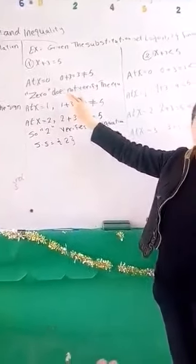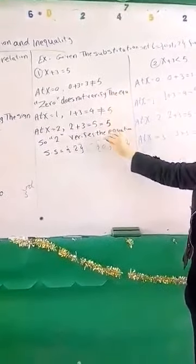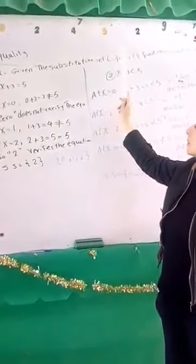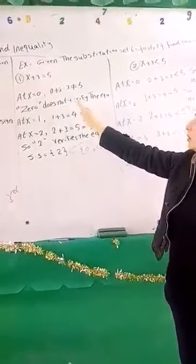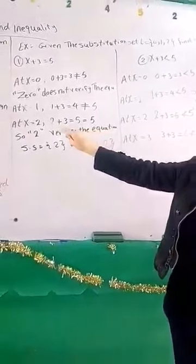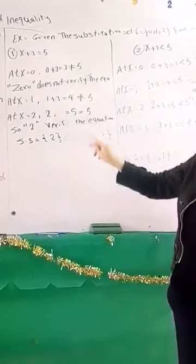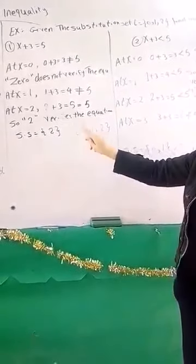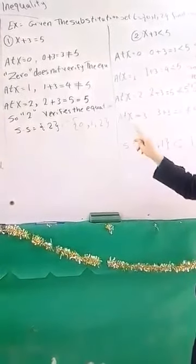The solution is x equals 2. We use steps to find this using substitution. At x equals 0: 0 plus 3 equals 3, which is not equal to 5, so 0 does not satisfy the equation. At x equals 1: 1 plus 3 equals 4, which is not equal to 5, so 1 does not satisfy the equation. At x equals 2: 2 plus 3 equals 5, which equals 5.